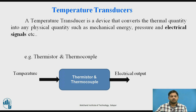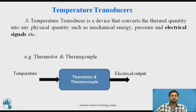Electrical transducers include thermistors and thermocouples. These two transducers, or sensors, sense the temperature and convert it into equivalent electrical output. That is why thermistors and thermocouples are types of electrical transducers.